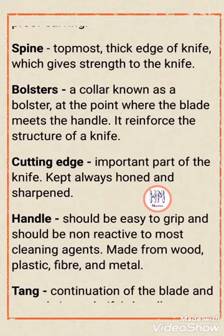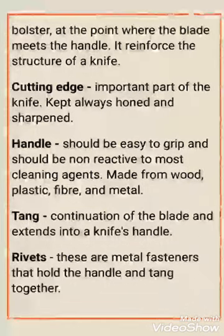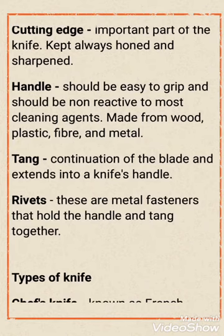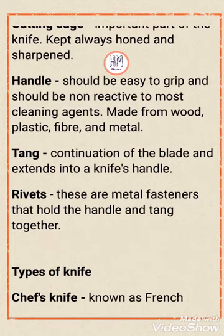Next one is the handle. The handle should be easy to grip and should be non-reactive to most cleaning agents. Different materials are used to make handles — wood, plastic, plastic fibers, or even metal. Many different materials including wood, plastic, and metal are commonly used for knife handles.